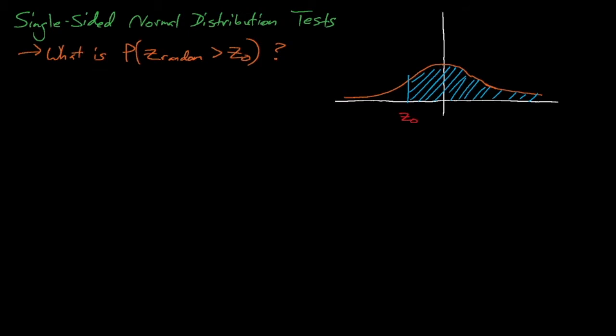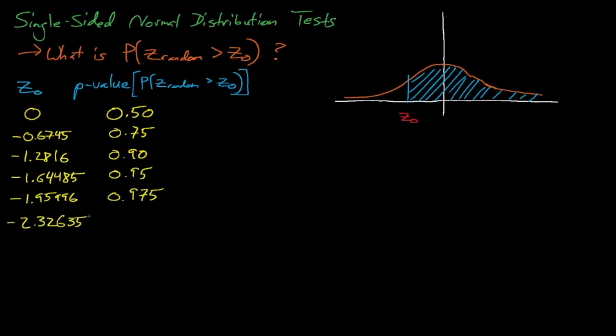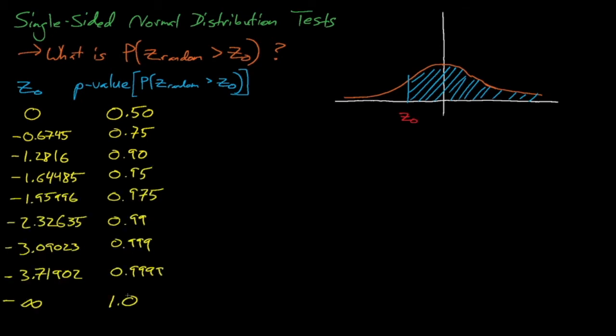If we want to know the probability that a randomly drawn point will be above some z0, then if z0 equals 0, there's a 50% chance that another randomly sampled point will be above it. This makes sense since z0 equals 0 corresponds to the mean, or the exact middle of the symmetric distribution. There's a 75% chance for z0 equal to negative 0.6745, a 90% chance for z0 equals negative 1.2816, a 95% chance for z0 equals negative 1.64485, and as z0 becomes smaller and smaller, there's an increasingly high chance that a randomly sampled point will be above it.